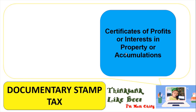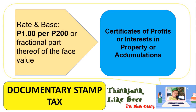For certificates of profit or interest in property or accumulations, the rate and base is 1 peso per 200 or fractional part thereof of the par value. For example, if your certificate of profit is worth 50,000 pesos: 50,000 divided by 200 equals 250, multiplied by 1 peso equals 250 pesos in documentary stamp tax.